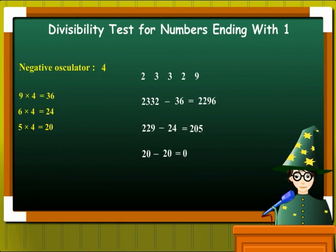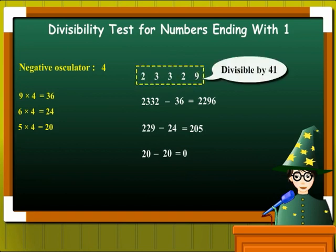And since we got 0 as a difference, this means that 23,329 is divisible by 41. The same method holds for all numbers that end with 1. Pretty simple in my opinion, isn't it?